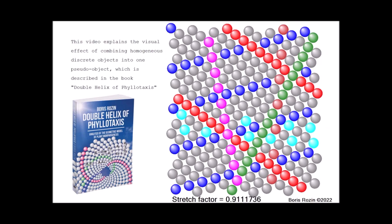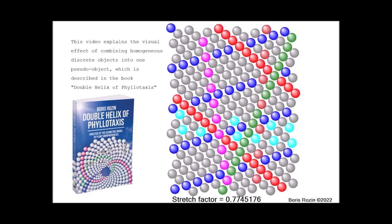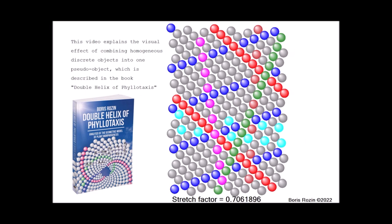This video explains the visual effect of combining homogeneous discrete objects into one pseudo-object, which is described in the book Double Helix of Phyllotaxis.